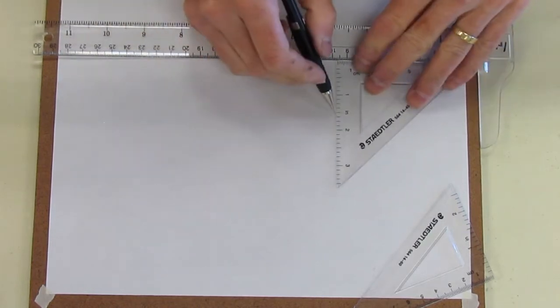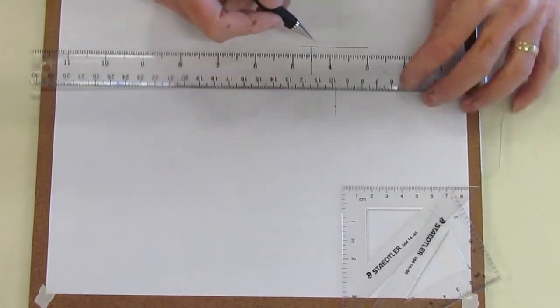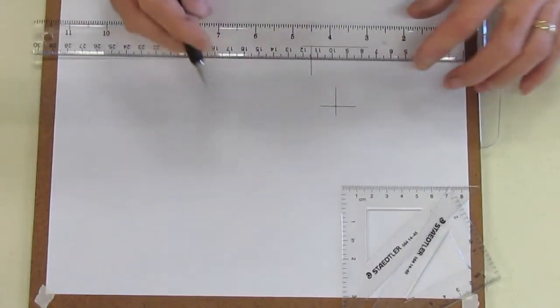If I had a vertical line, say a vertical line like this, and I wanted to draw a line through here that's perpendicular, I just bring my t-square up and draw a line. Again, perpendicular.